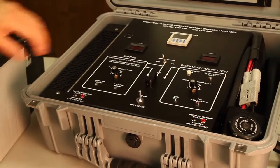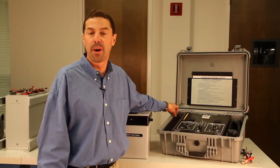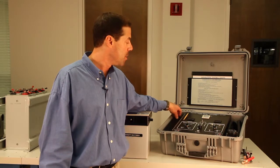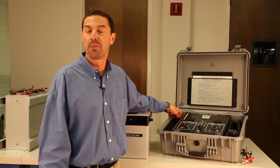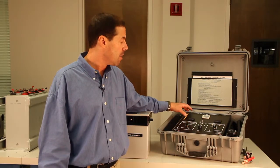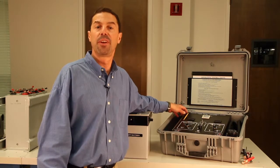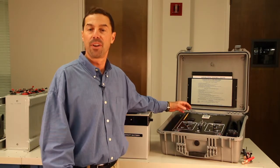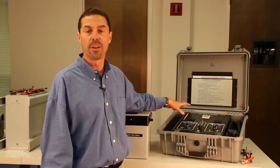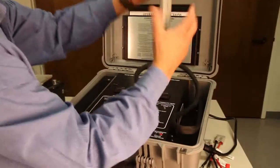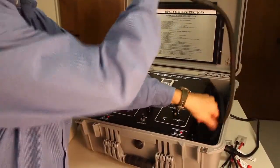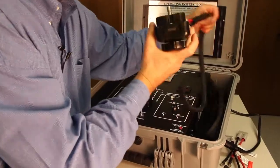This unit is sort of the workhorse. It combines the charge function of our C25 and the true constant current 0-50 amp discharge section of our D50, all in one unit. It's in a portable case. You can stick it under a table when you're done with it. It's very modular.